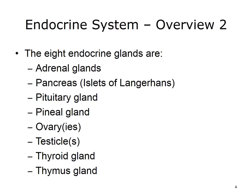The eight endocrine glands include the adrenal glands, the pancreas — specifically the islets of Langerhans — the pituitary gland, the pineal gland, the ovaries, the testes, the thyroid gland, and the thymus gland. Some of the endocrine glands also have additional functions beyond producing hormones. Examples include the pancreas, the testes, and ovaries.